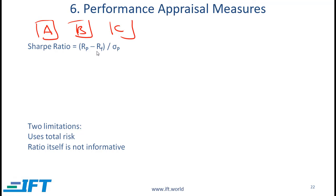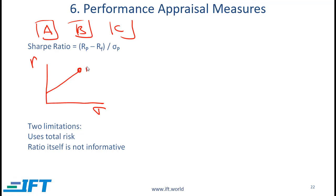The Sharpe ratio is an extremely important ratio. It is the excess return of a portfolio over the risk-free rate divided by the risk of the portfolio. We can connect this with the capital allocation line, where return is on the y-axis and risk is on the x-axis. For a given portfolio p, the Sharpe ratio is the slope of the capital allocation line. A steeper capital allocation line is superior because we are getting a higher return for each unit of risk.